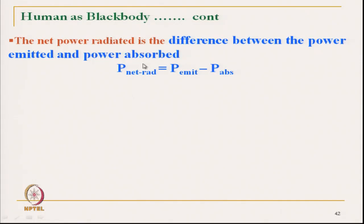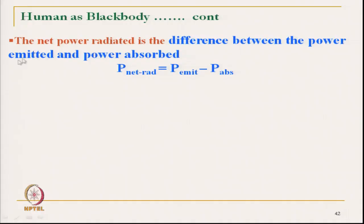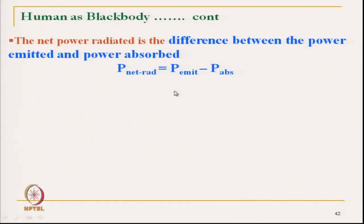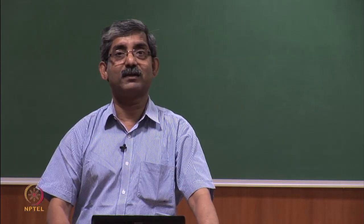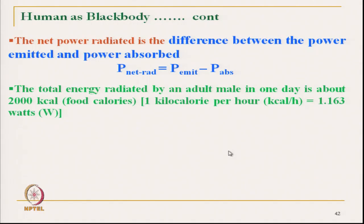The net power radiation is the difference between the power emitted and the power absorbed. We keep absorbing heat and also releasing heat, so net emitted heat is the difference between those. The total heat energy radiated by an adult male in one day is about 2000 kilocalories — that is the total heat emitted throughout the day.